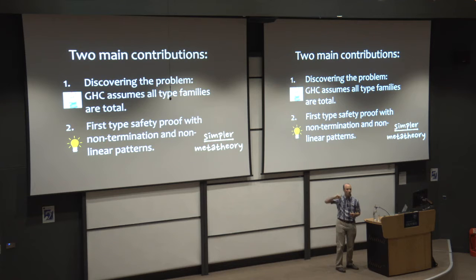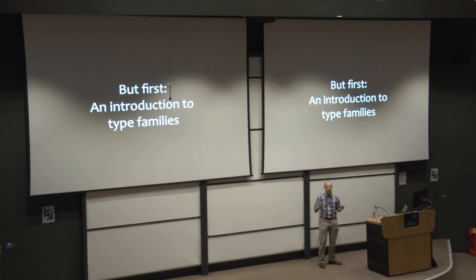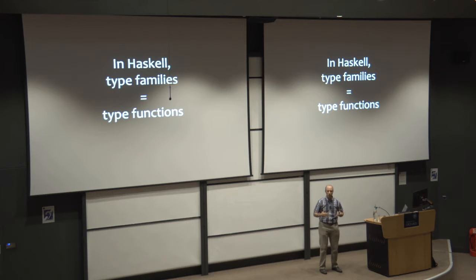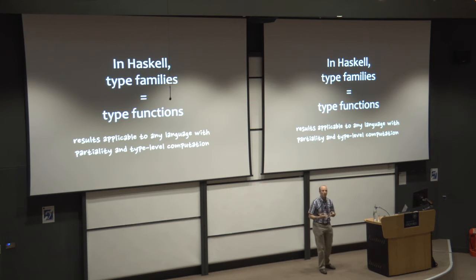And on the way, we have simplified the metatheory. But before we get any further, let me give an introduction to type families, because not everyone has used them. So when I say type families, that's the same thing as type functions. That's the Haskell word for type functions. And though this talk is based in Haskell, the ideas I'll present would apply to any language that has both partiality and type-level computation. In fact, Scala has both of these features and already has constrained type families, although they didn't know what problems they were avoiding by having them.